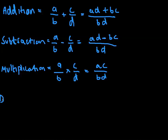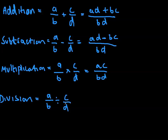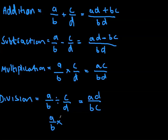And division — pretty similar in a way. So if we have A over B divided by C over D, we get AD over BC. Why? Because we flip the second fraction and multiply. So A over B times D over C. When you multiply that, it gives you AD over BC.